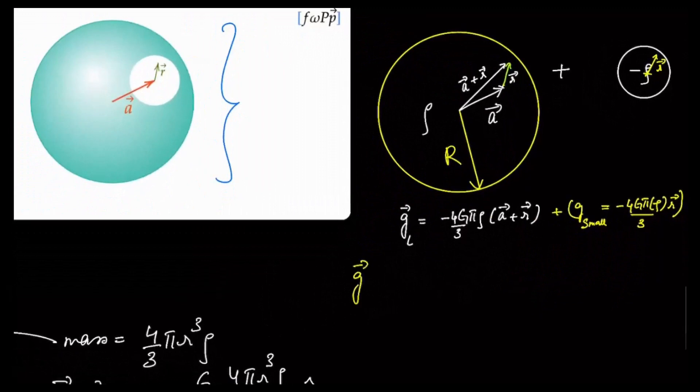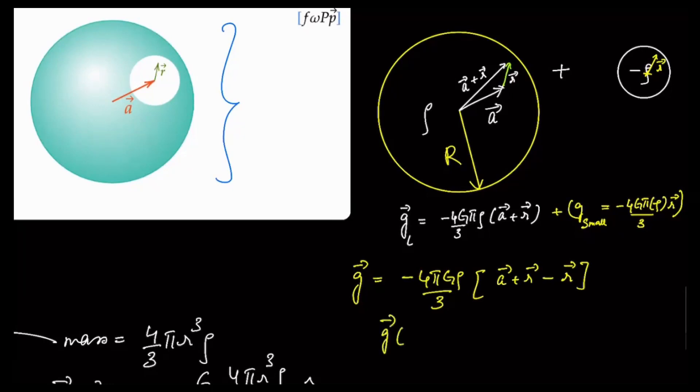The net g is going to be... And therefore, we are going to end up with a gravitational field at the point r, which is a constant.